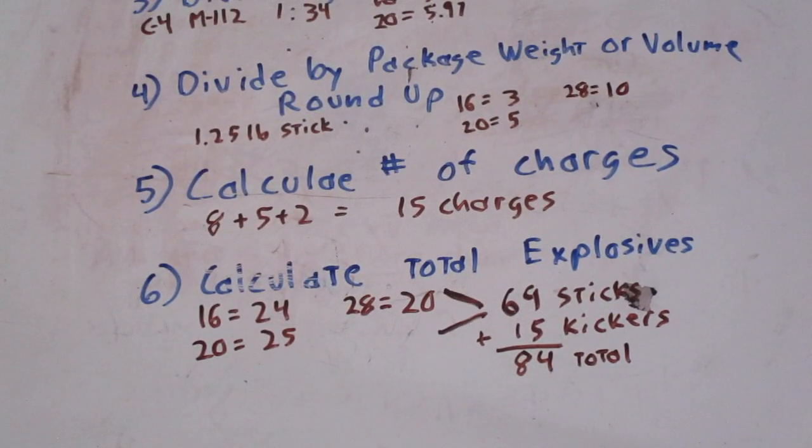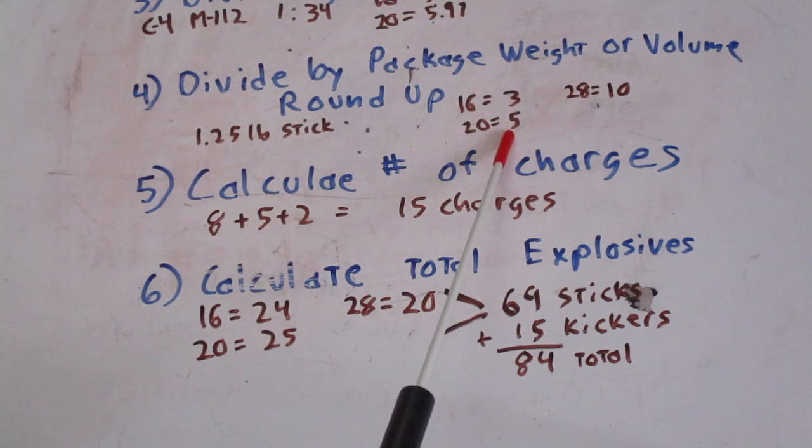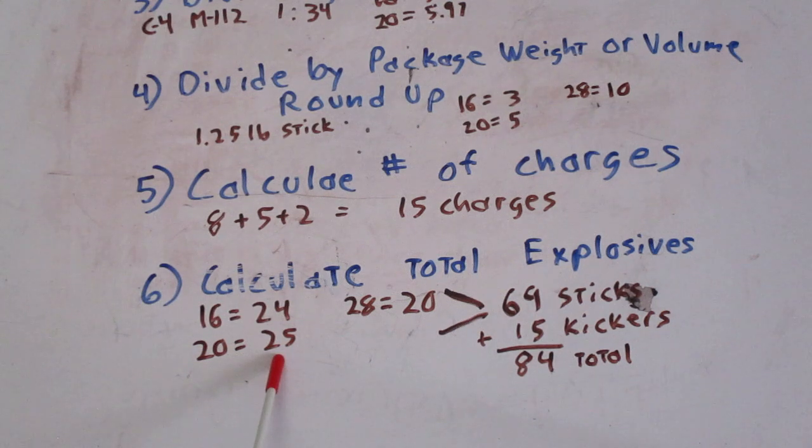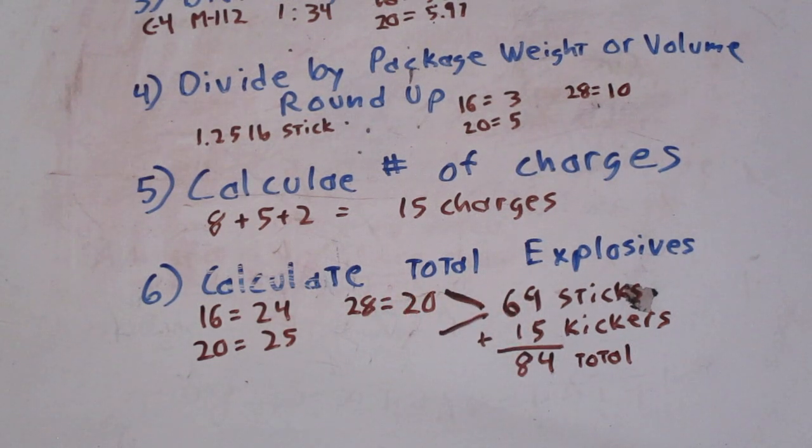Now, calculate our total explosives. So we're going to take our 8 from the 16 inchers, times it by the 3, so we're going to need 24 sticks. Our 5 for the 20 inchers, times it by 5 per tree, 25 sticks. Our 2 28 inch trees need 10 sticks each, total of 20. We add that together, we get 68 sticks for the trees, for the charges. Now, we also need to add in there our kickers that goes on the opposite side of the tree. Well, we got 15 charges, 15 trees, so we need to add 15 in there for our kickers. So our total explosives we would need to put in this particular abatisse is 84 sticks of M112 C4 block explosives, or C4 sticks.